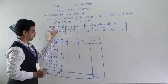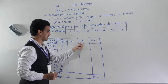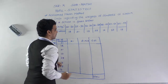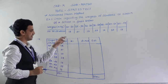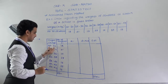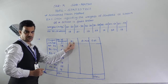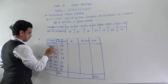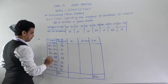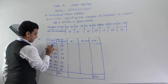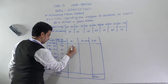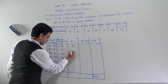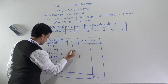To solve this by the assuming method, we need to find deviations di = xi − A. Since class intervals are given, we first find xi, the class mark, using the formula: class mark = (upper limit + lower limit) / 2. For the first interval, 50 + 52 divided by 2 gives 51.